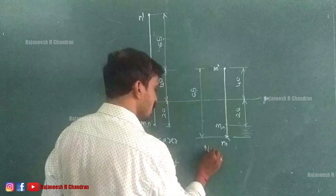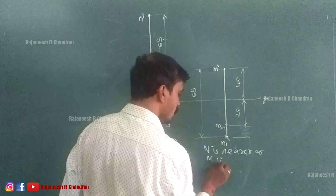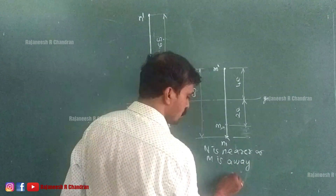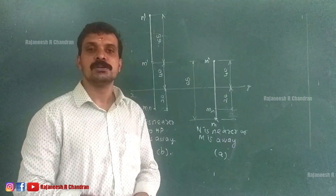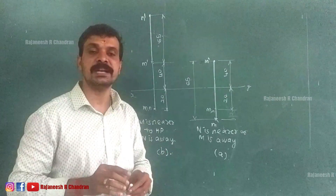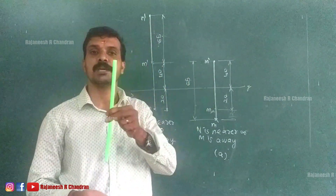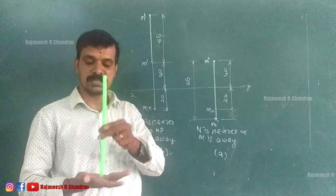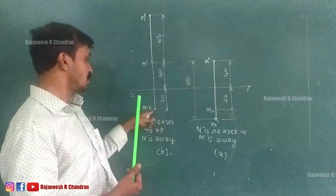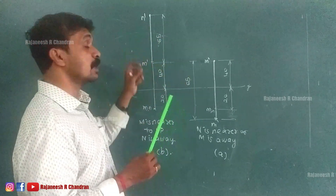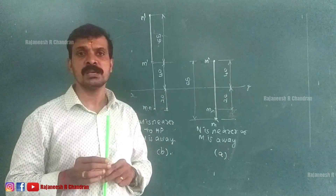So here N is nearer — that is Part A — and M is nearer — that is Part B of our question. In this question we studied a line perpendicular to HP and parallel to VP. Since the line is perpendicular to HP, the top view is a point and the front view shows the true length, parallel to VP.